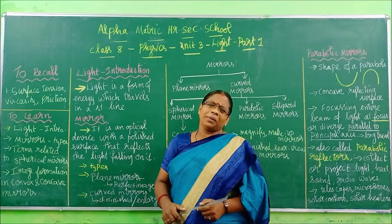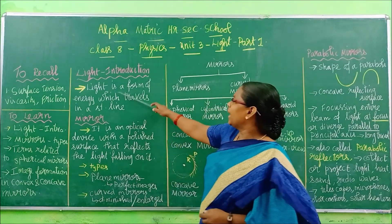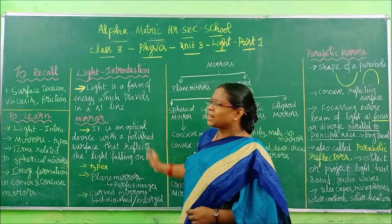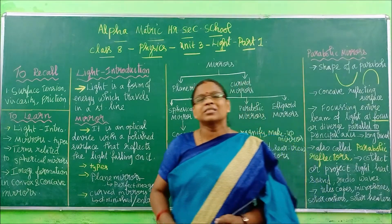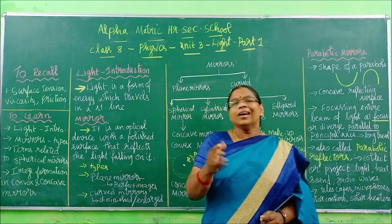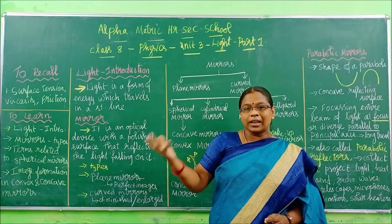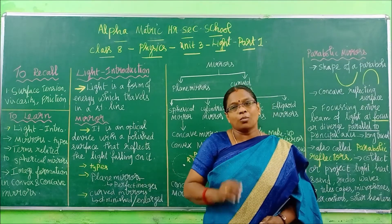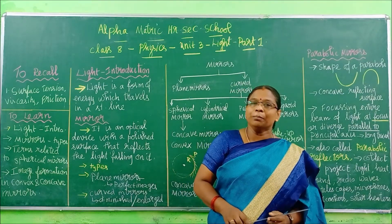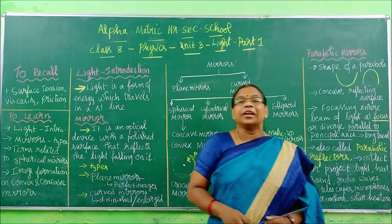It is not a big complex definition — it is a very basic definition. Light is a form of energy which travels in a straight way. Simple, as simple as that. Like air, heat, sound — light is also a form of energy. But the main property is it will always travel in a straight way.